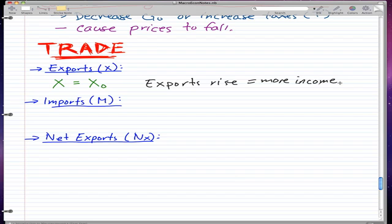You sell more goods to other countries, you get more money. Imports is not as intuitive. For imports, M = mY, and little m is equal to the change in imports (big M) over the change in big Y. This is the marginal propensity to import, which I'll abbreviate as MP import.